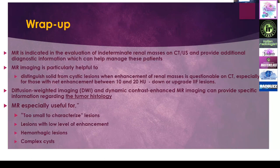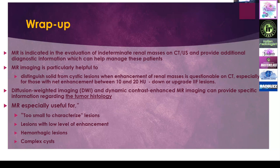In summary, MRI is indicated for evaluation of indeterminate renal masses on CT and ultrasound, providing additional diagnostic information for managing these patients. MRI is particularly helpful distinguishing solid from cystic lesions when enhancement is questionable, especially when net enhancement on CT is between 10 and 20 Hounsfield units. It can upgrade or downgrade Bosniak 2F lesions, avoiding repeated follow-up every six months to one year over two and a half to three years. Diffusion-weighted and dynamic contrast-enhanced imaging provide specific information on tumor histology and staging. MRI is especially useful for too-small-to-characterize lesions, low-level enhancement lesions, hemorrhagic lesions, and complex cysts.